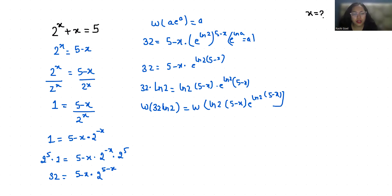Therefore, W(32 ln 2) equals (5 - x) times ln 2.